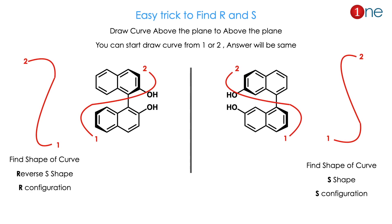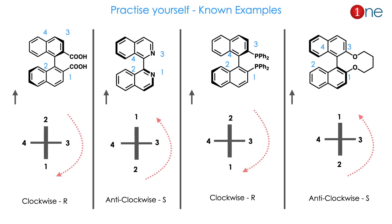Now let us see the trick to find R and S. If the compound is given, draw a curve from above the plane to above the plane — from group 1 to group 2. You can start from either 1 or 2; the answer will be the same. If the shape of the curve is a reverse-S shape, it is R configuration. If it is an S shape, it is S configuration. The left-side example shown has a reverse-S shape, so it is R. The right-side example has an S shape, so it is S. The shape of the curve decides the configuration.